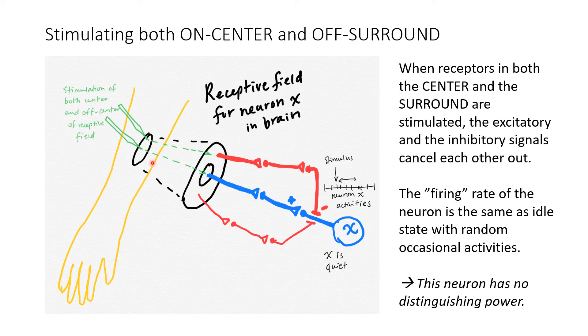So what happens when both the center and the surround are stimulated at the same time? Well, since we have both excitatory and inhibitory signals, they cancel each other out, and the neuron ends up not receiving any signal. So it remains idle with random occasional activities, as can be seen in the timeline of activities here.